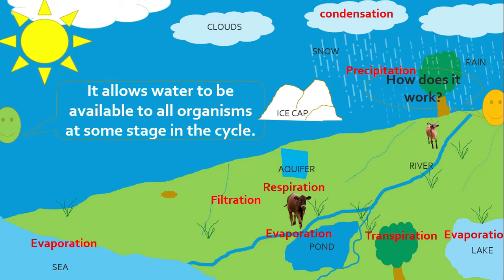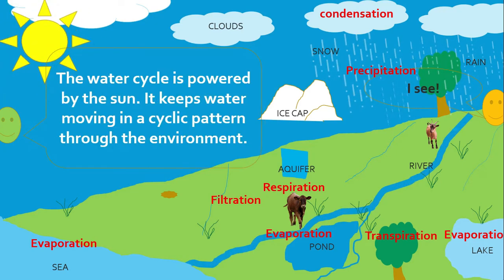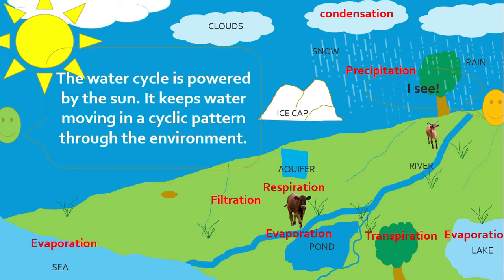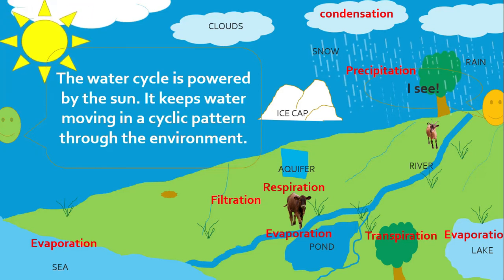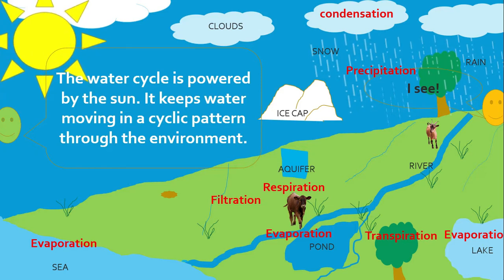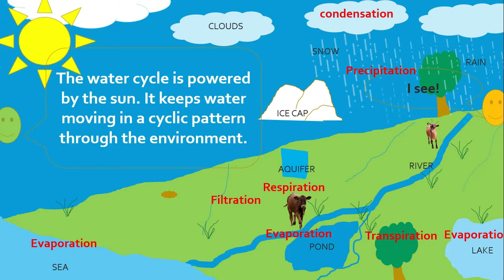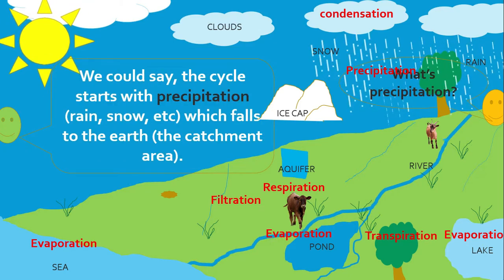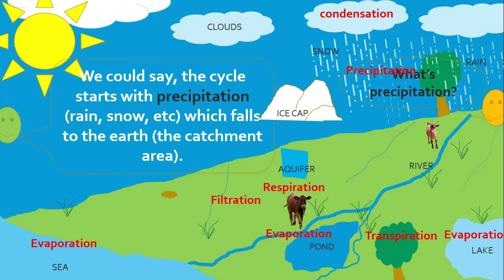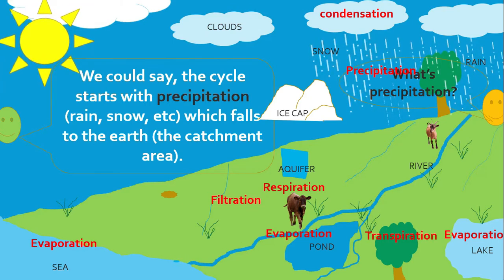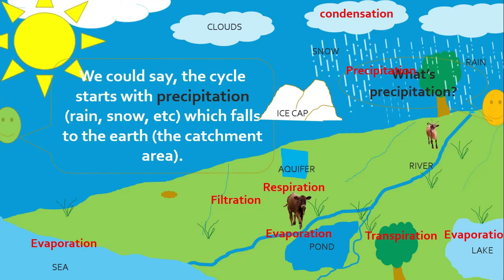How does it work? The water cycle is powered by the sun. It keeps water moving in a cyclic pattern through the atmosphere. We could say the cycle starts with precipitation — rain, snow, etc. — which falls to the Earth, the catchment area.